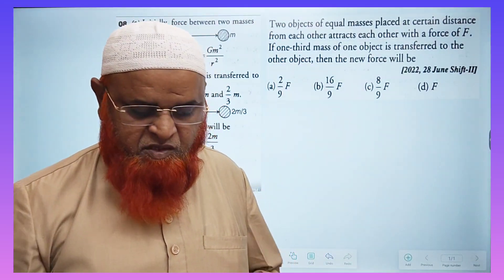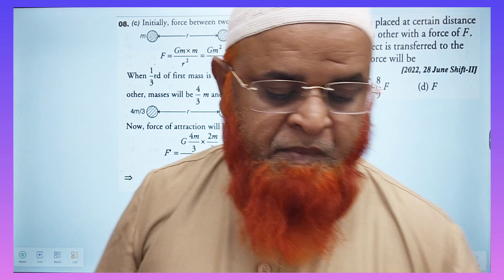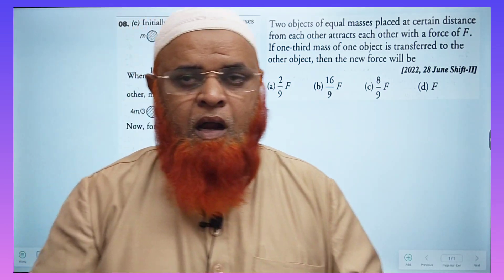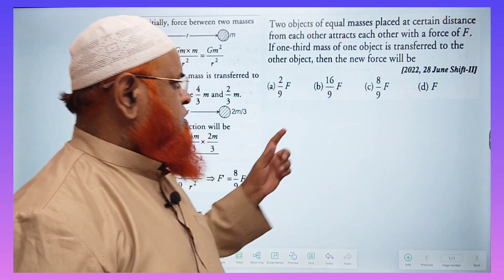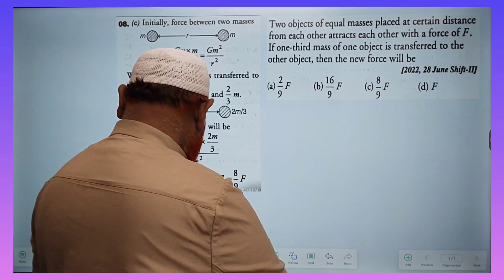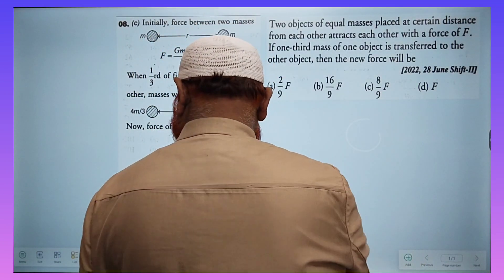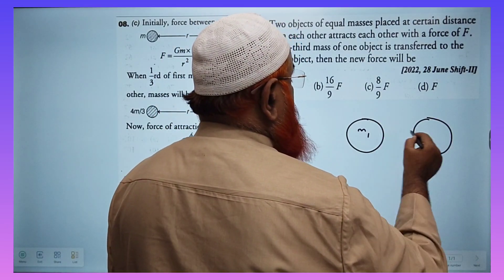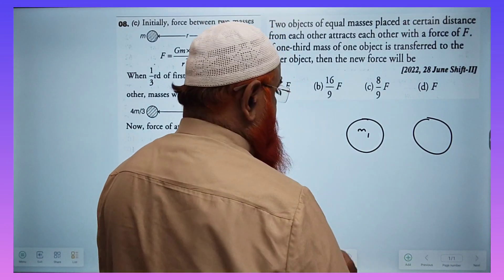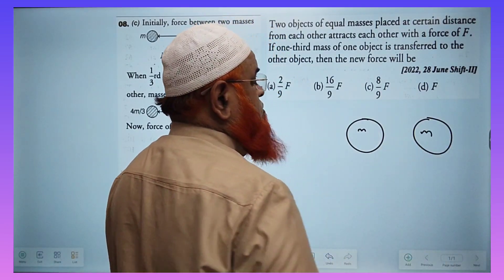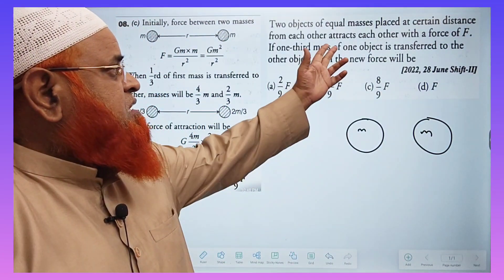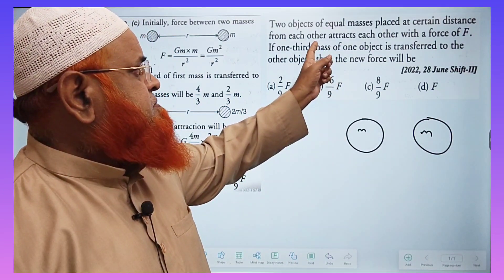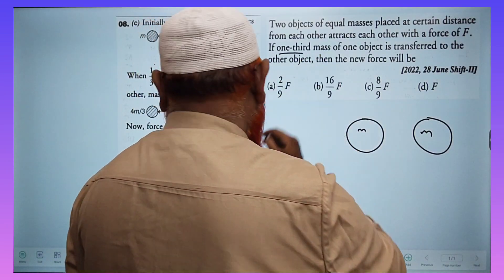My dear friends, I would like to discuss a previous year JEE Mains question today. In the question, it is said that there are two masses m1 and m2, and both masses are the same. It is given that previously there are two masses which are equal.